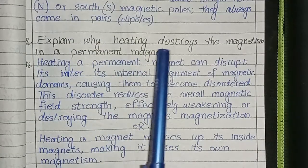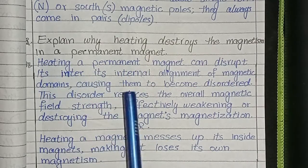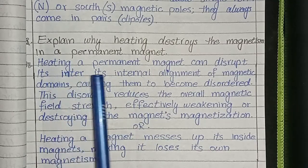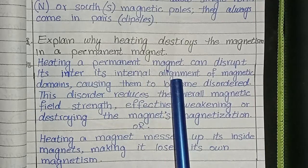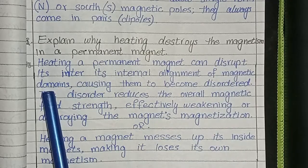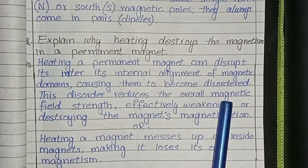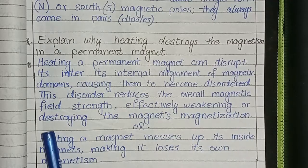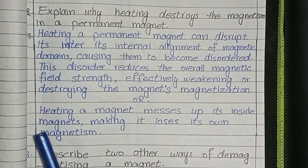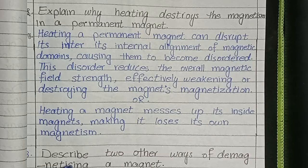Third question: explain why heating destroys the magnetism in a permanent magnet. Heating a permanent magnet can disrupt its internal alignment of magnetic domains, causing them to become disordered. This disorder reduces the overall magnetic field strength, effectively weakening or destroying the magnet's magnetization. In short: heating a magnet messes up its internal magnetic domains, making it lose its magnetism.